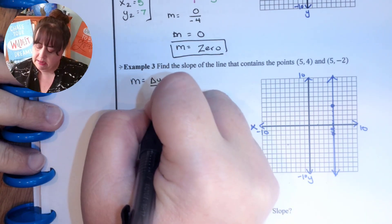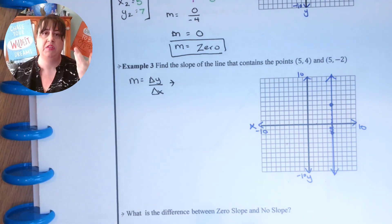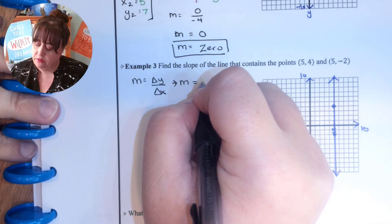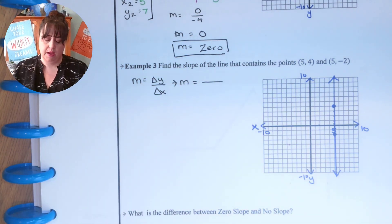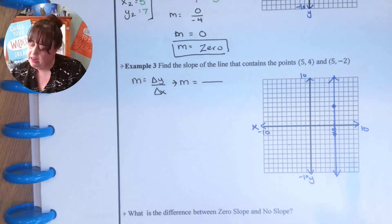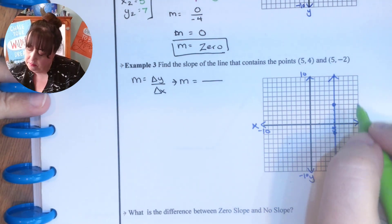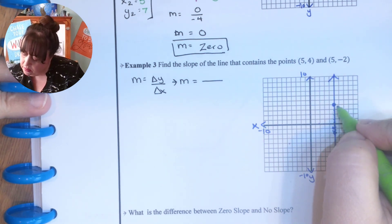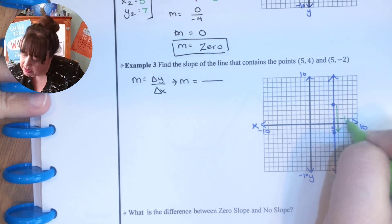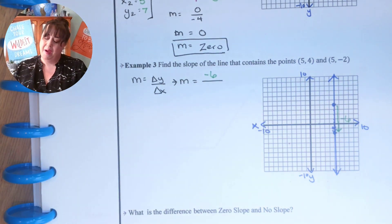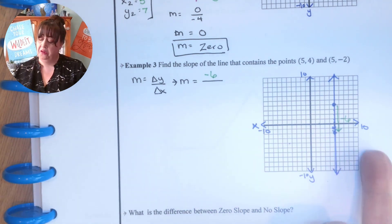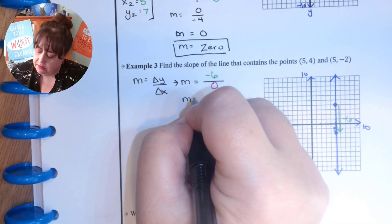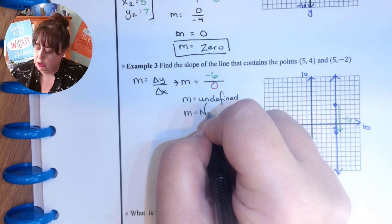Delta y over delta x — we always write it down every single time, even if you think you've memorized it, because you want to make sure the reader knows what you're doing. So how many did I go up or down? From (5,4) to (5,-2), I went down 6. How many did I go over? None. Can you divide by 0? You cannot — so that's undefined. We call this no slope.